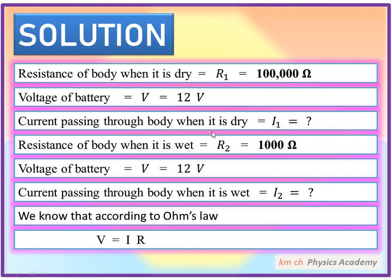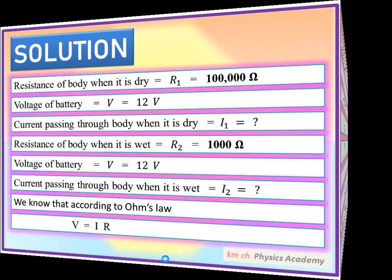Now we will apply Ohm's law to both questions. The battery is same, so for the first case we have I1 and R1, and V equals I2 and R2 for the second case. So the current passing through the body, I1 and I2, we will find from there.